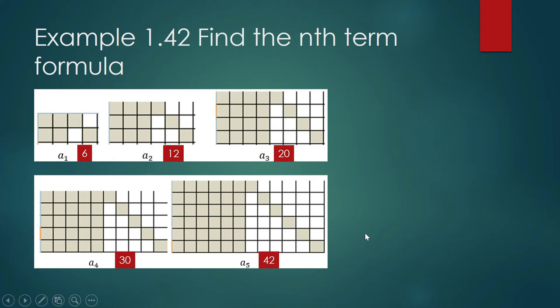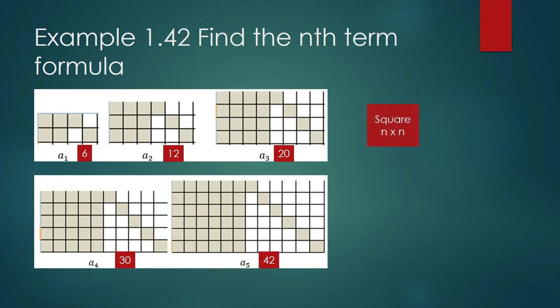We did the counting part, but what about the pattern? If you were to just look at the numbers — 6, 12, 20 — the differences between terms are 6, 8, 10, 12. It's not easy to see the pattern from the numbers alone. But when we pay attention to the picture, there is an obvious pattern: we have a square which is n by n, and then we have these stairs.